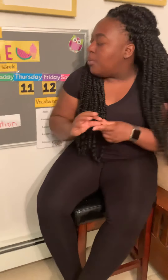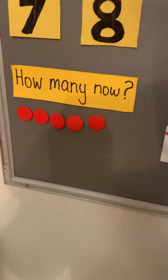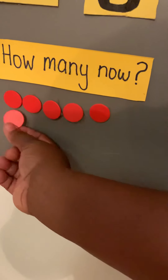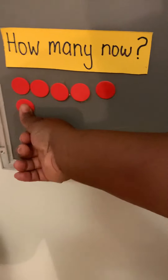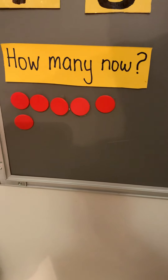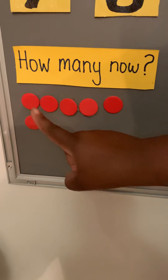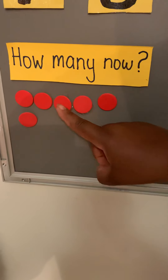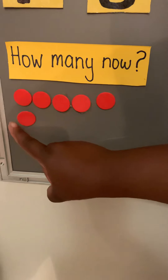Let's go to our 'How Many' now to make sure. We have five red dots, and if we add one more, it would be six. Let's count them — one, two, three, four, five, six. Awesome!